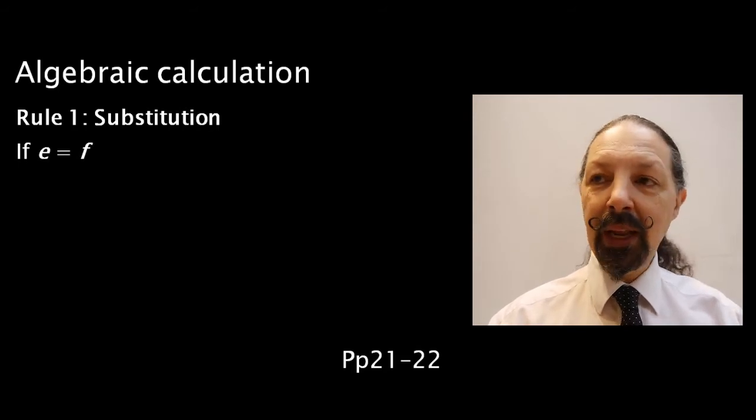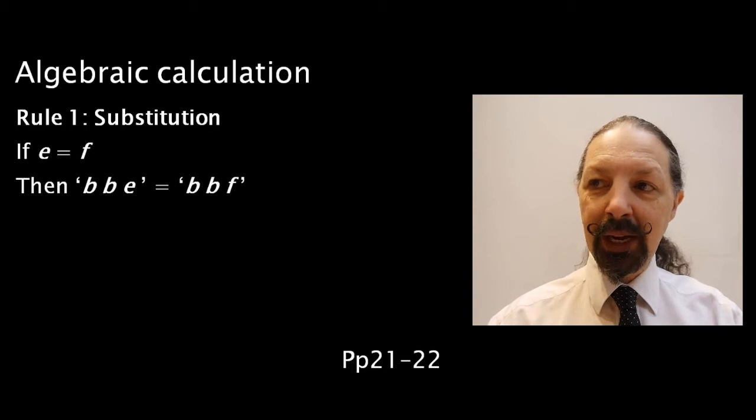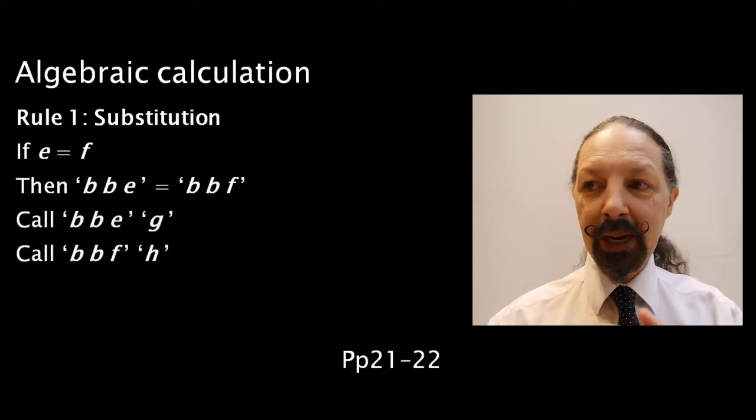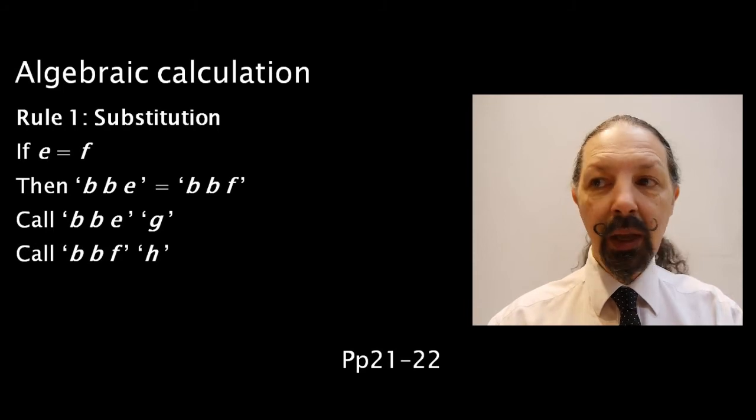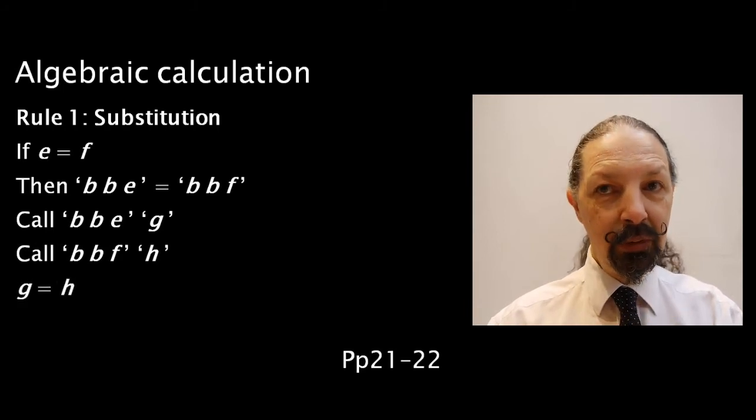I start with this. If E equals F, then BBE equals BBF. Let's call BBE G. Let's call BBF H. Therefore, G equals H.